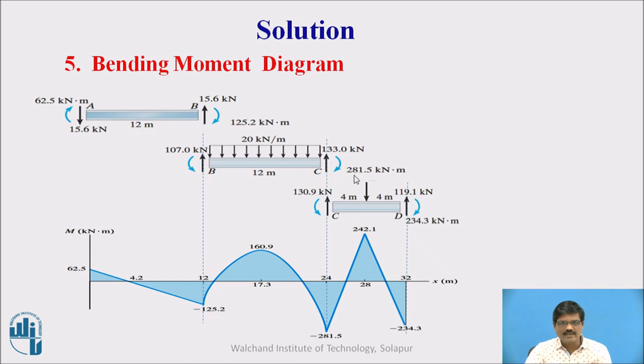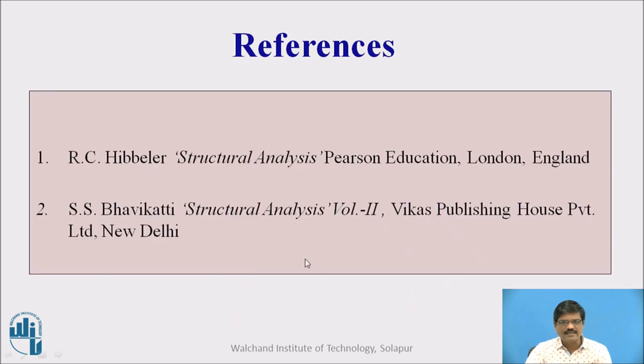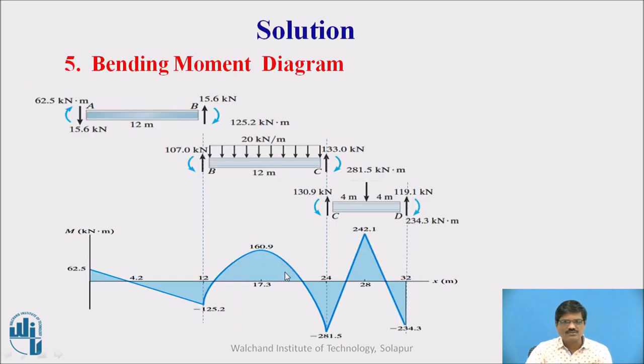Here also we get a hogging moment, 281.5 kNm here. And here the last moment is 234.3 kNm which is hogging in nature here. So in this way we draw the bending moment diagram from the free body diagram. And this is positive, this is negative. In this way we can give the proper labeling to this.